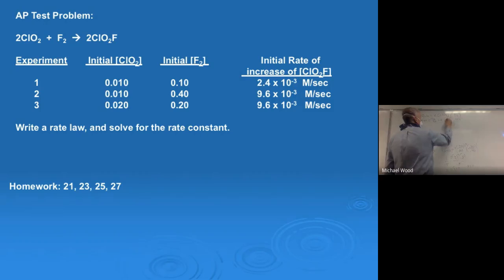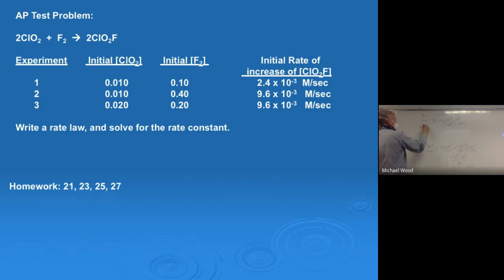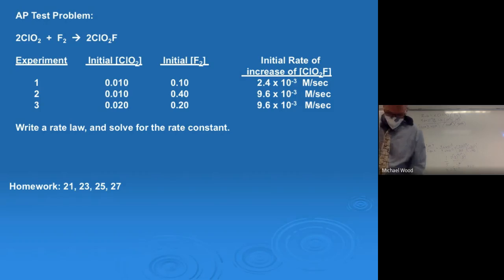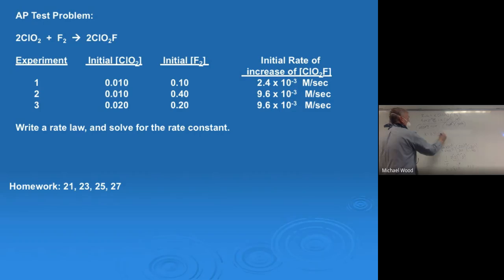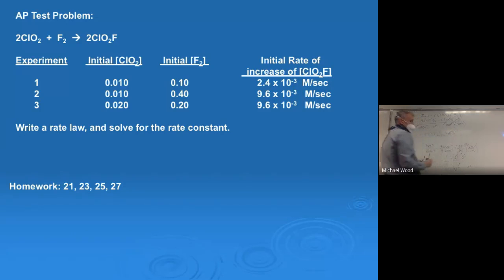Solving for k — the unit is important — the unit is molarity. Using my calculator, using experiment two, I get 2.4. So the rate constant is 2.4, and the unit is 1 over molarity per second — or written as M⁻¹s⁻¹. You could also use experiment one and plug in 2.4 × 10⁻³, 0.01, and 0.1, and get the same value. It doesn't matter which experiment you choose.